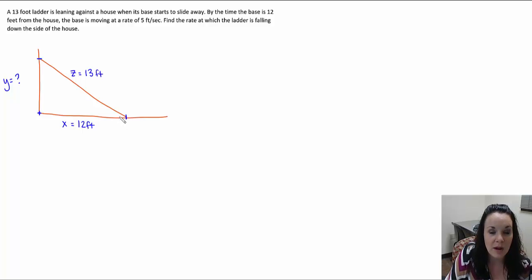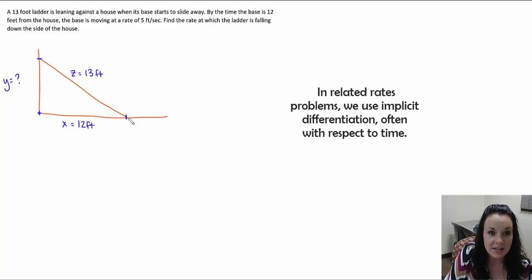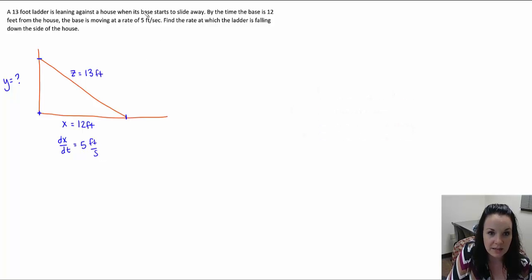Now I'm gonna start putting in my rates. Now these are how fast are these distances changing with time. And so with related rates, we often use implicit differentiation and we differentiate with respect to time. So right here, X is changing with respect to time at a rate of 5 feet per second. And that's given to us right in the problem. And then here, this change in Y with respect to time is actually what we're asked to find. And I'm just gonna circle that here in a different color so we remember that that's the one that we're searching for.